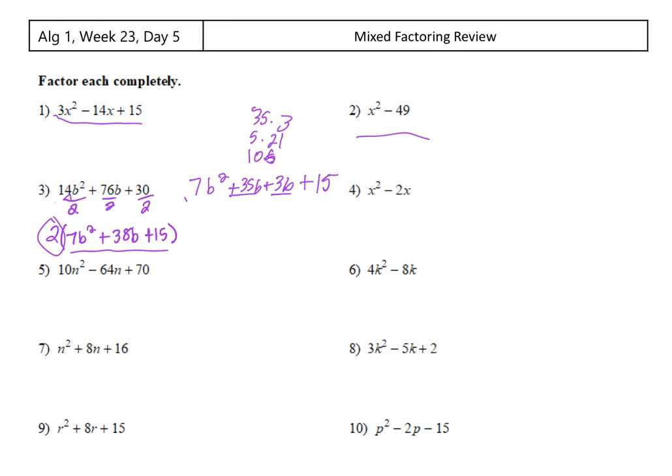So split the middle term. We're going to do factoring by grouping and say, okay, I can take out a 7b and get b plus 5. And on the second two, I can take out a 3 and get b plus 5. So this is b plus 5 times 7b plus 3.